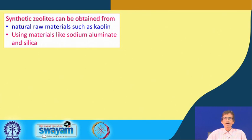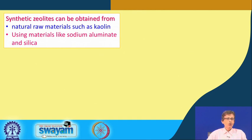On one hand we have those naturally occurring zeolites and on the other hand we have synthetic zeolites. Since out of 200 only 50 are naturally occurring, 150 are synthetically - or laboratory-prepared - zeolites we can have. The first and most useful material we can use for making zeolite is kaolin.